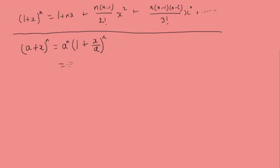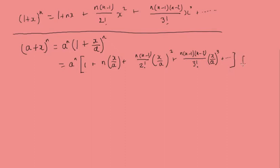We would have a^n outside the bracket. We'll have 1 plus n times (x/a) plus n(n-1) over 2 factorial times (x/a)^2 plus n(n-1)(n-2) over 3 factorial times (x/a)^3, and so on, for the modulus of x over a less than 1.